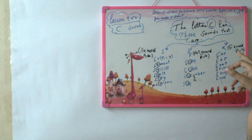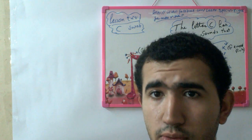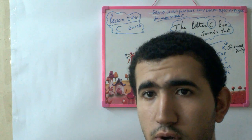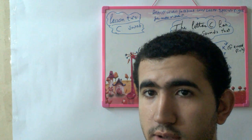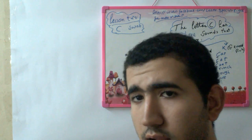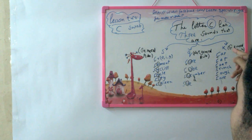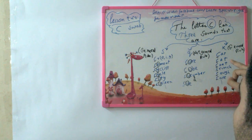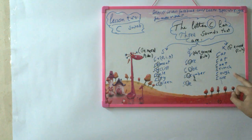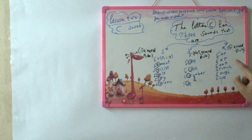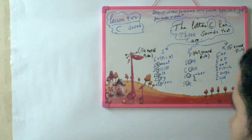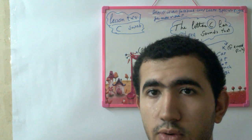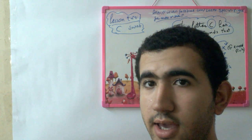The third pronunciation is K, and this is a general rule. Most words starting with C are pronounced as K. Like: car, cat, coat, crunch, cuff, and care. So that's for the C letter.